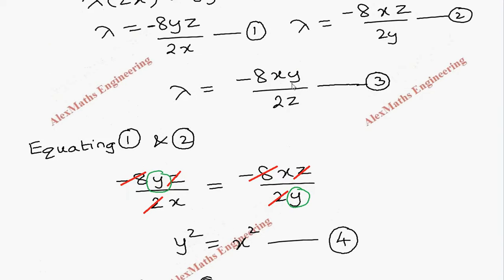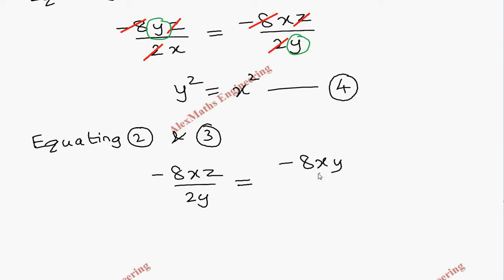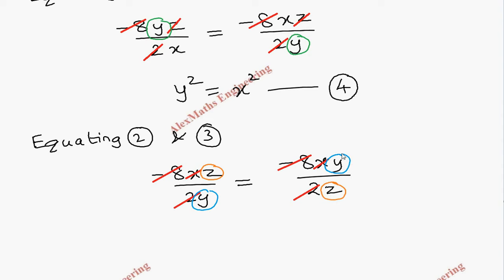Now equating the second and third lambda expressions: −8xz/(2y) = −8xy/(2z). We cancel −8, 2, and x from both sides. Cross-multiplying the remaining terms gives z² = y². This is our fifth equation.